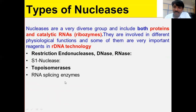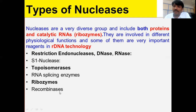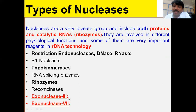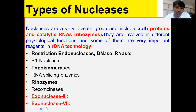RNA splicing enzymes are known as ribozymes that cut RNA. Recombinases are involved in homologous recombination and also cut DNA. Additionally, Exonuclease III has the speciality of starting degradation of DNA at the three-prime end, while Exonuclease VII is a special enzyme that can act only on single-stranded DNA.